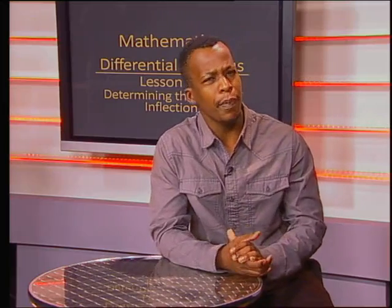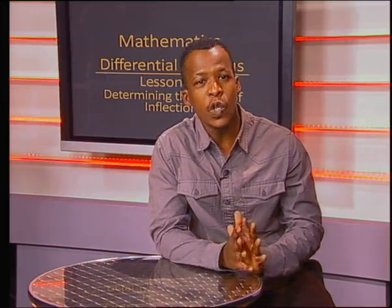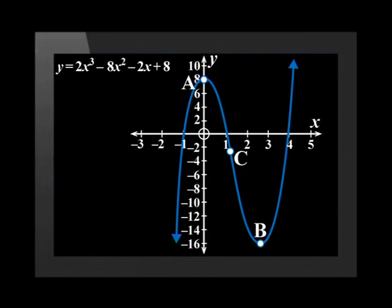But how does this help us? Well, let's go back to our graph to answer that question. At point A, the second derivative is negative. And at point B, the second derivative is positive.